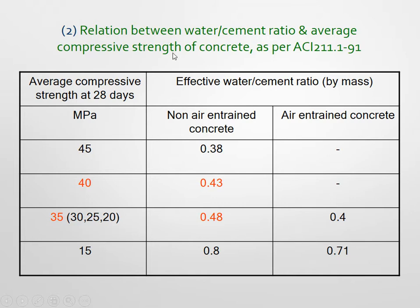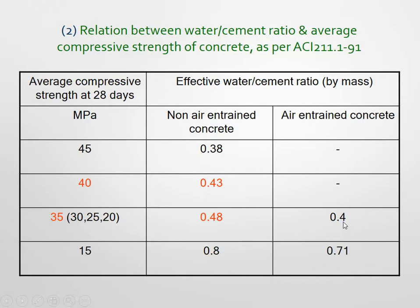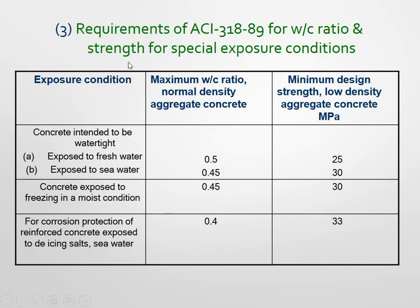Table 2 shows the relation between water-cement ratio and average compressive strength of concrete. For a required strength of 45 N/mm², the water-cement ratio for non-air-entrained concrete is 0.38. If the required strength is 40 N/mm², the value is 0.43. If the required strength is 35 N/mm², the value is 0.48. For air-entrained concrete, the water-cement ratios are altered accordingly.